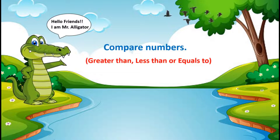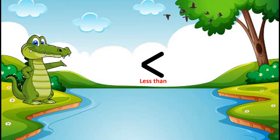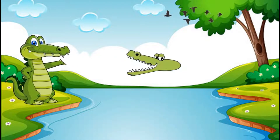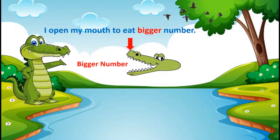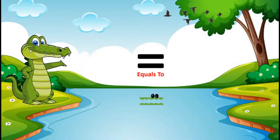A number can be greater than, less than, or equal to a given number. This is the greater than sign and this is the less than sign. These signs look like my mouth. I open my mouth to eat the bigger number, so remember that my mouth is always opened towards the bigger number and closed towards the smaller number.